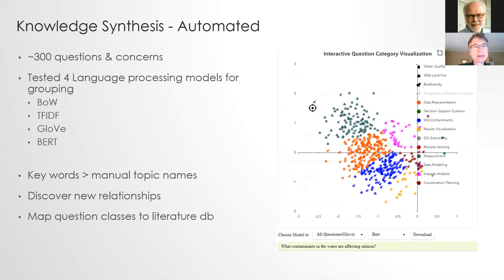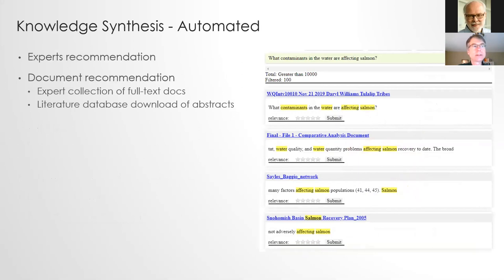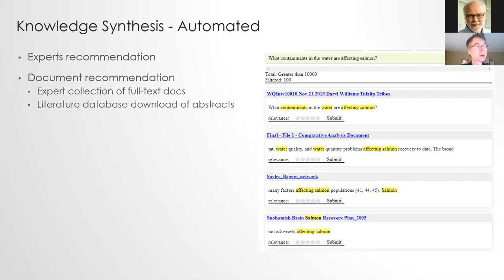They also did work linking these questions to a literature database. We had two literature stores: one from experts themselves on the particular topic, and another where the New Jersey team harvested about 15,000 abstracts on water quality from a major literature database. They put these through language processing and were able to relate them, so for a question like 'what contaminants in the water are affecting salmon,' they could pull out from the literature stores the most relevant pieces of literature for that particular question.